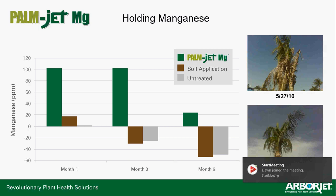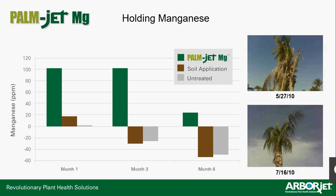A study done on coconut palms compared soil-applied manganese sulfate versus PalmJet trunk injection. One month after application, the PalmJet-injected palms had over 100 parts per million of manganese in the leaf tissue, while the soil-applied was right around 18. By month three, there was actually more manganese from the injection, and the soil application was already showing deficiency levels. By month six, the injected palms still had a surplus of manganese — showing the clear advantage of trunk injection for micronutrients.